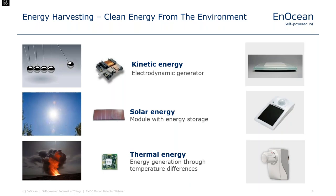Energy harvesting means clean energy from the environment — we reuse energy that is already present. We work with three different energy sources: kinetic energy, mostly known from our self-powered switches via electrodynamic energy generation; solar energy, as used in EMDC, where ambient light is harvested using solar cells; and thermal energy, which generates power through temperature differences — for instance, leveraging the difference between a radiator and the environment to power a radiator valve.